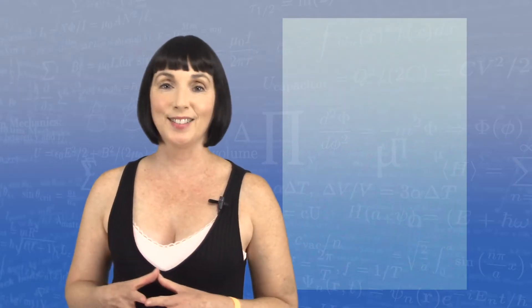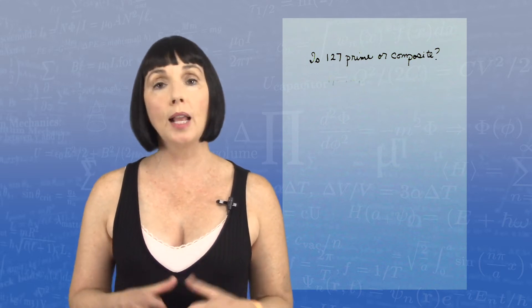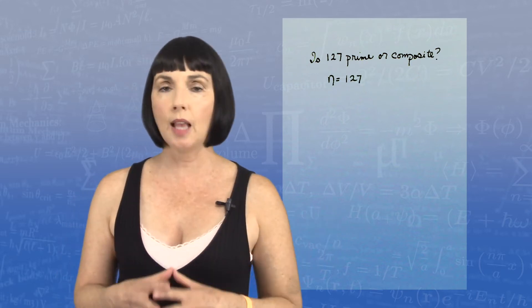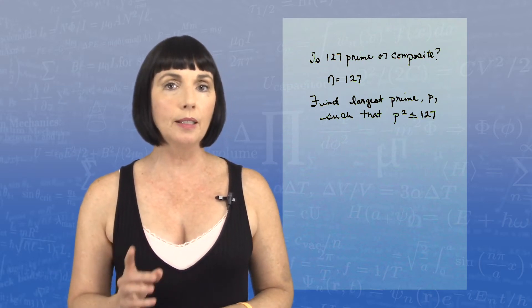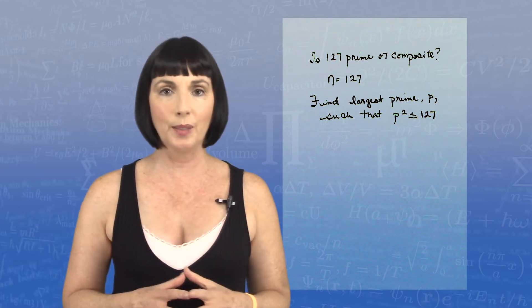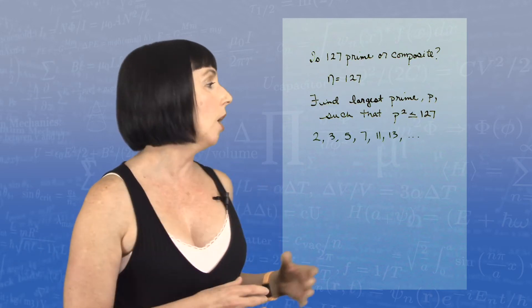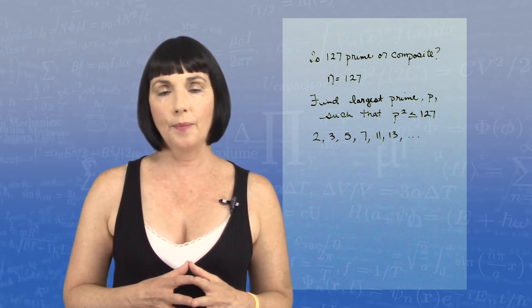Okay, let's take a look at this. Is 127 prime or composite? So in this case, our number n is equal to 127. And we're looking for a prime number p such that p squared is less than or equal to n, in this case 127. So our first few prime numbers are 2, 3, 5, 7, 11, 13, etc.